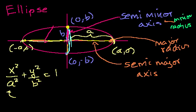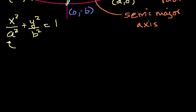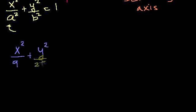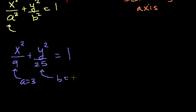Let's do an example with actual numbers. Suppose we have x squared over 9 plus y squared over 25 equals 1. The radius in the x direction is a, and since 9 = a², we get a = 3. Since 25 = b², we get b = 5.